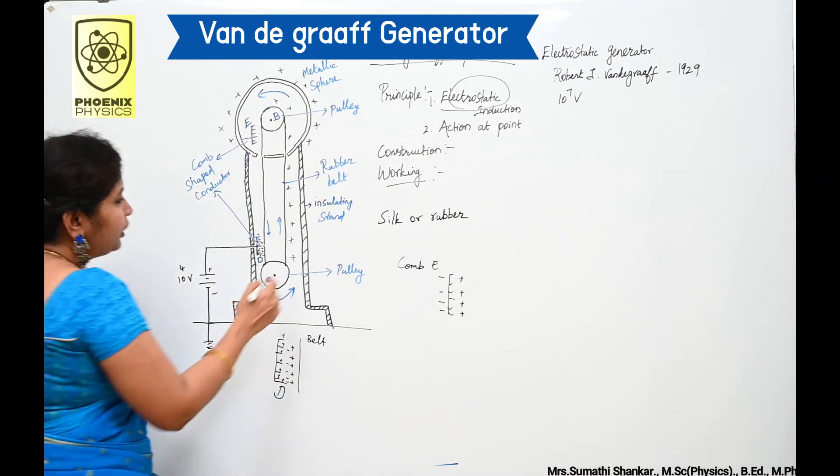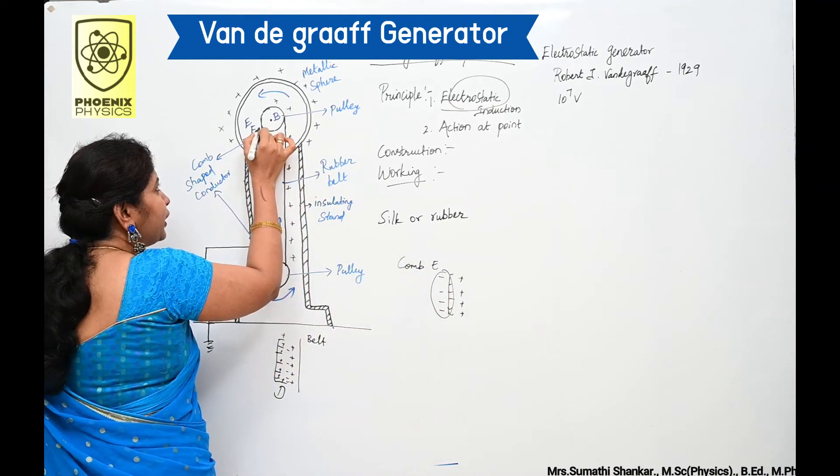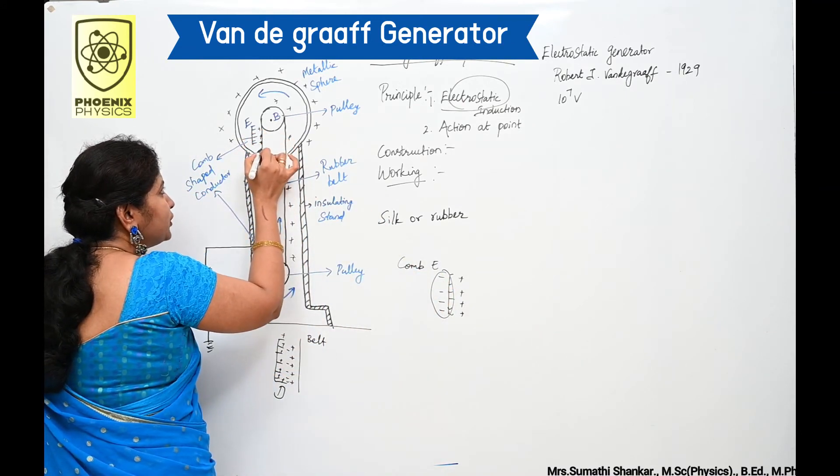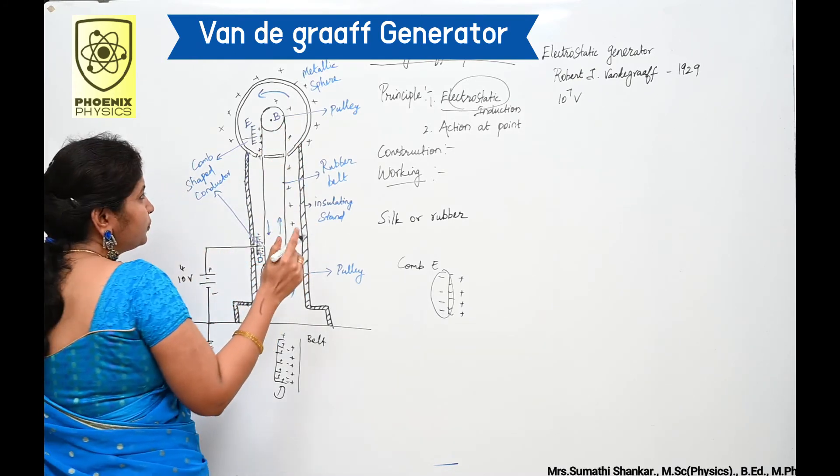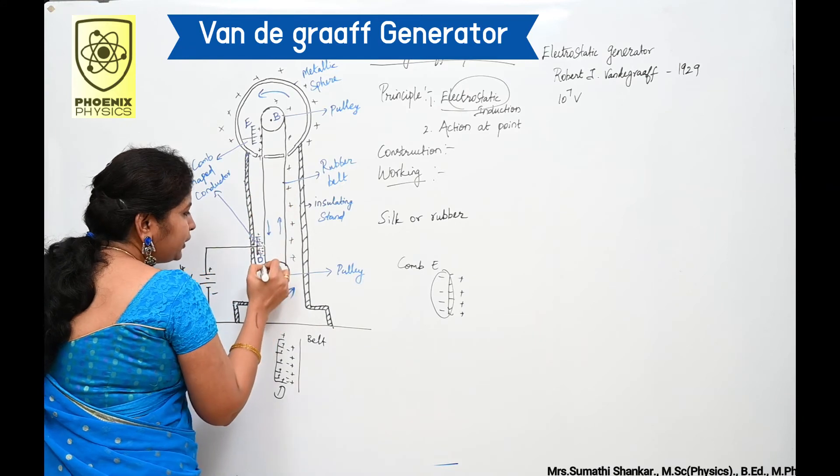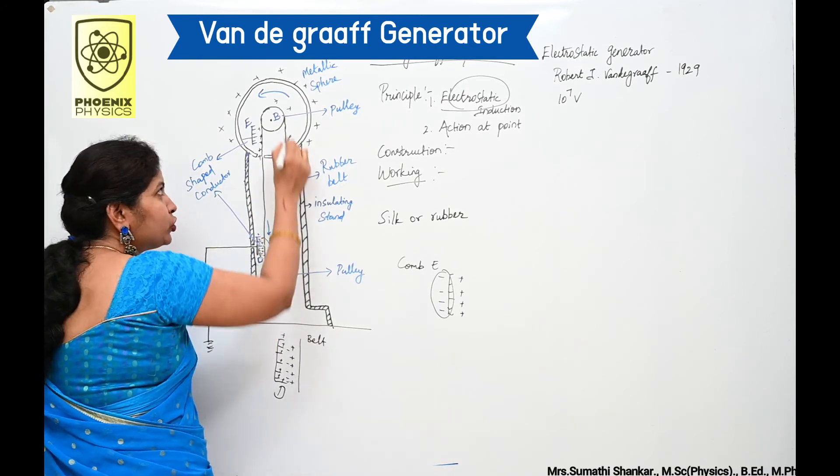At the same time, negative charges are nullified by positive charges in the belt. When the belt descends it has no net charge. Again it gains positive charges at the bottom and goes up.